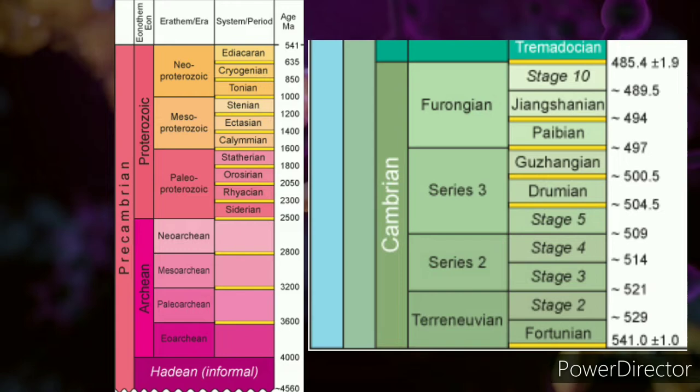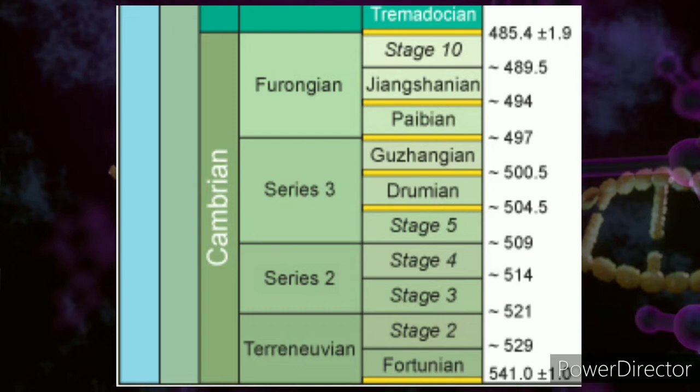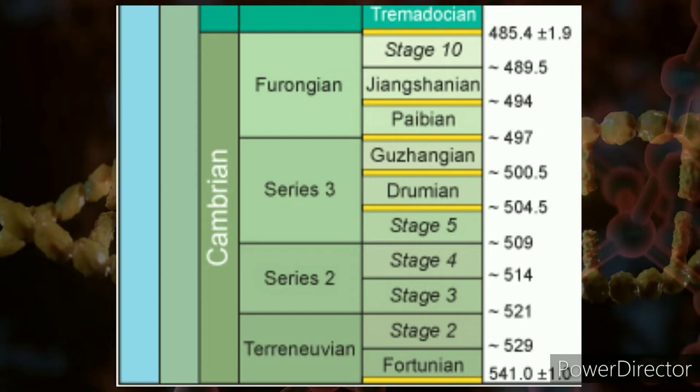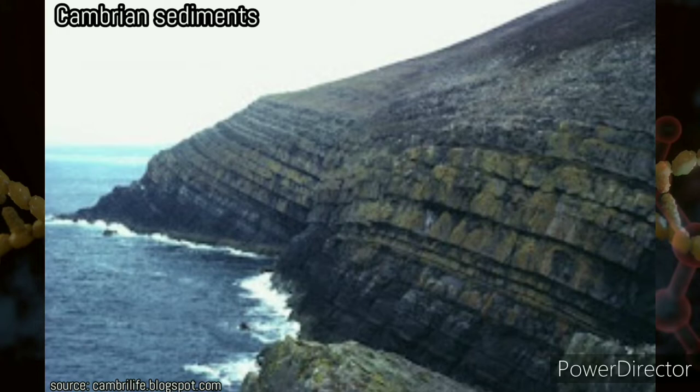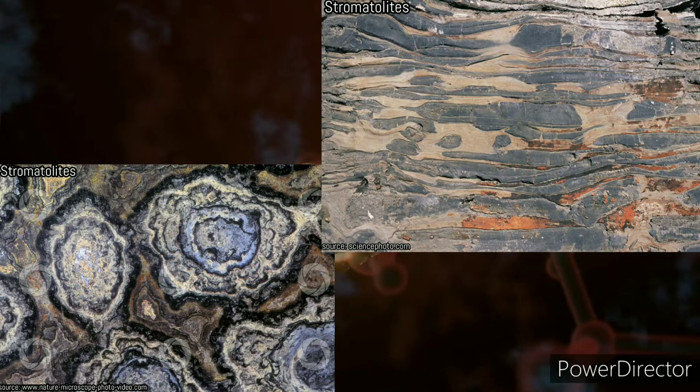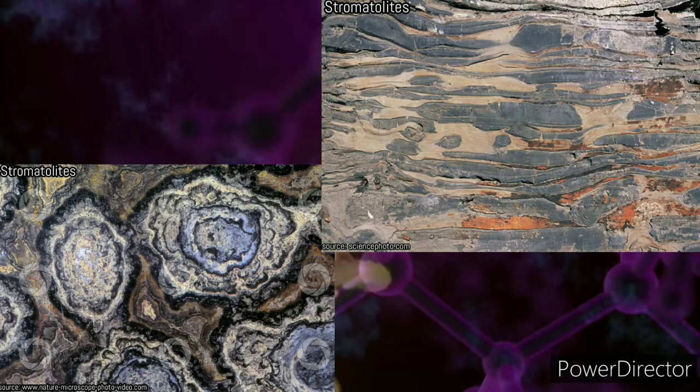What is the Precambrian period? The Precambrian period comes before the current Phanerozoic eon and just before the Cambrian period. The Cambrian period is the first period of the Phanerozoic eon, named after Cambria — the Latinized name for Wales — where rocks from this age were first studied. The Precambrian accounts for 88 percent of the Earth's geologic time.